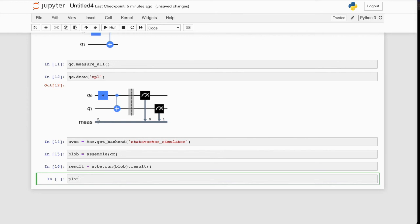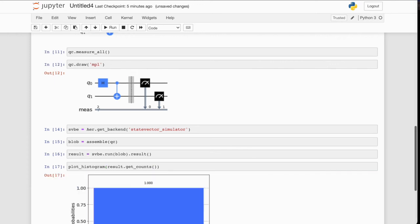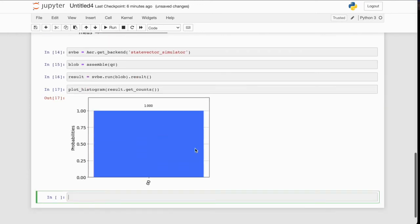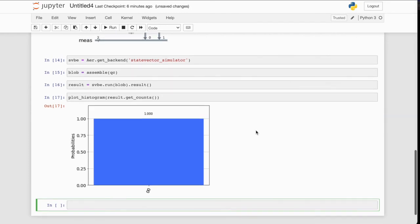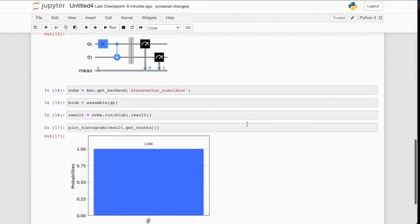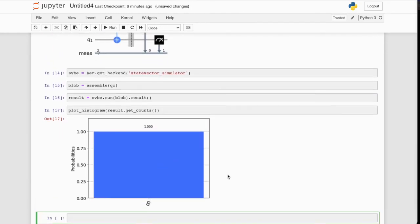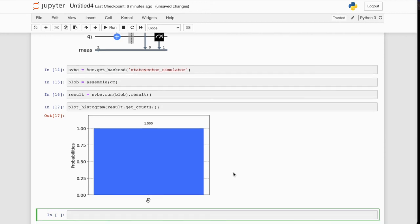Now let's see what the results look like. To do that we'll use the plot_histogram. And we'll pass result. And we'll ask to get the counts of the result. And there you have it. This circuit was collapsed to the state 00. And that's our quantum hello world in Qiskit.